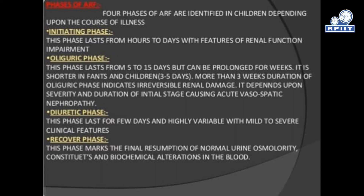Phases of acute renal failure: Four phases of acute renal failure are identified in children depending upon the causes of illness. First is the initiating phase, which lasts from hours to days with features of renal function impairment. The oliguria phase lasts from 5 to 15 days but can be prolonged for weeks; it is shorter in infants and children at 3 to 5 days. Duration of oliguria phase of more than 3 weeks indicates irreversible renal damage. It depends upon severity and duration of the initial stage causing acute tubular necrosis.